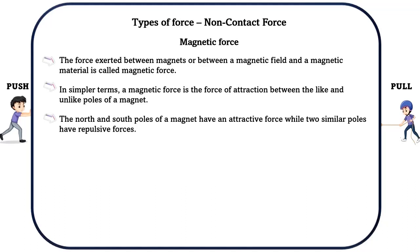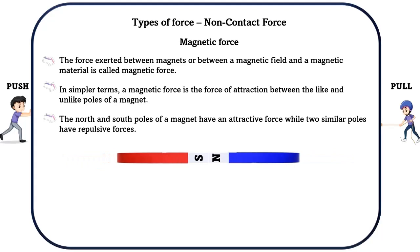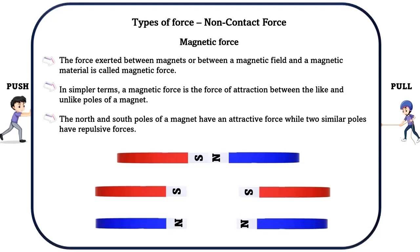Magnetic force. The force exerted between magnets or between a magnetic field and a magnetic material is called magnetic force. Examples of magnetic materials include iron, nickel, cobalt, stainless steel, and many rare earth metals. In simpler terms, a magnetic force is the force of attraction between the like and unlike poles of a magnet. The north and south poles of a magnet have an attractive force, while two similar poles have repulsive forces.